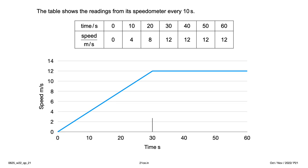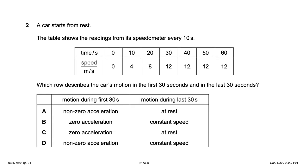In the first 30 seconds the speed is increasing from 0 to 30, meaning it's accelerating. From 30 to 60 seconds the speed is constant, so it's zero acceleration. Motion during the first 30 seconds is non-zero acceleration, motion during the last 30 seconds is constant speed — so option D is the right answer.